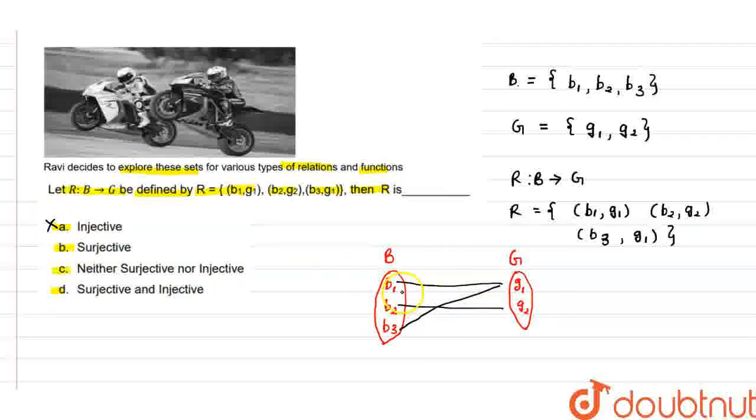If we check the second option, surjective relation: for a surjective relation, each element of B should match with at least one element of G. We check: b1 matches with g1, b2 matches with g2, and b3 matches with g1. At least each element of B matches with an element of G. There can be more—b1 and b3 both match with g1—but that's not an issue. The requirement is that each element should match with at least one element of G. So the given function is a surjective function.